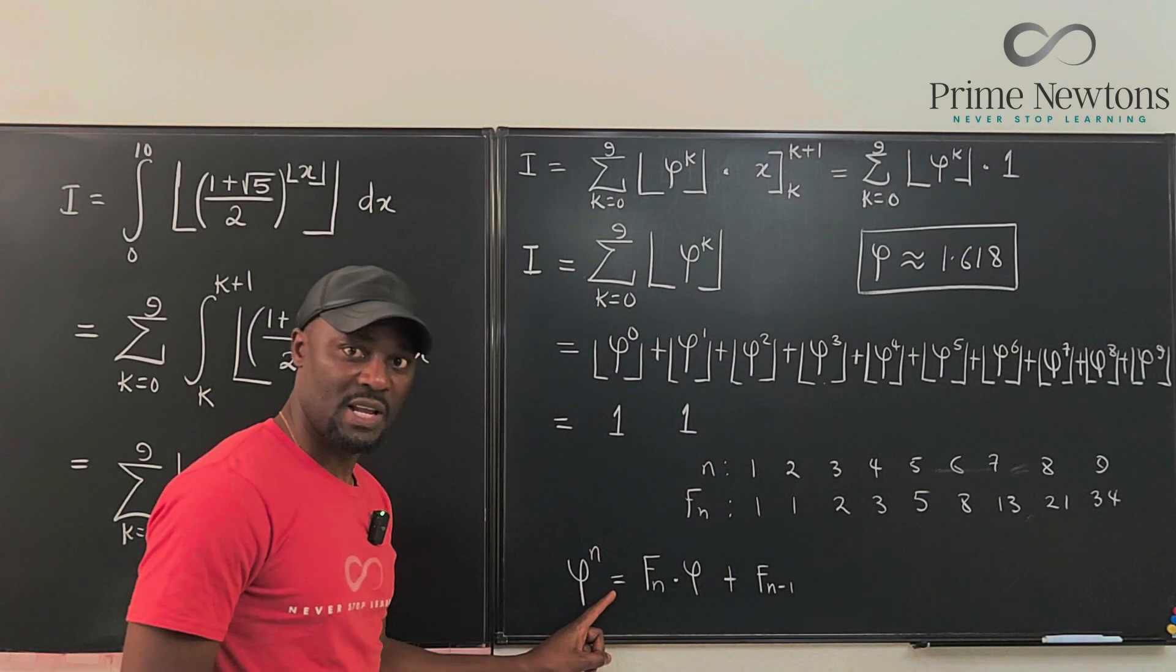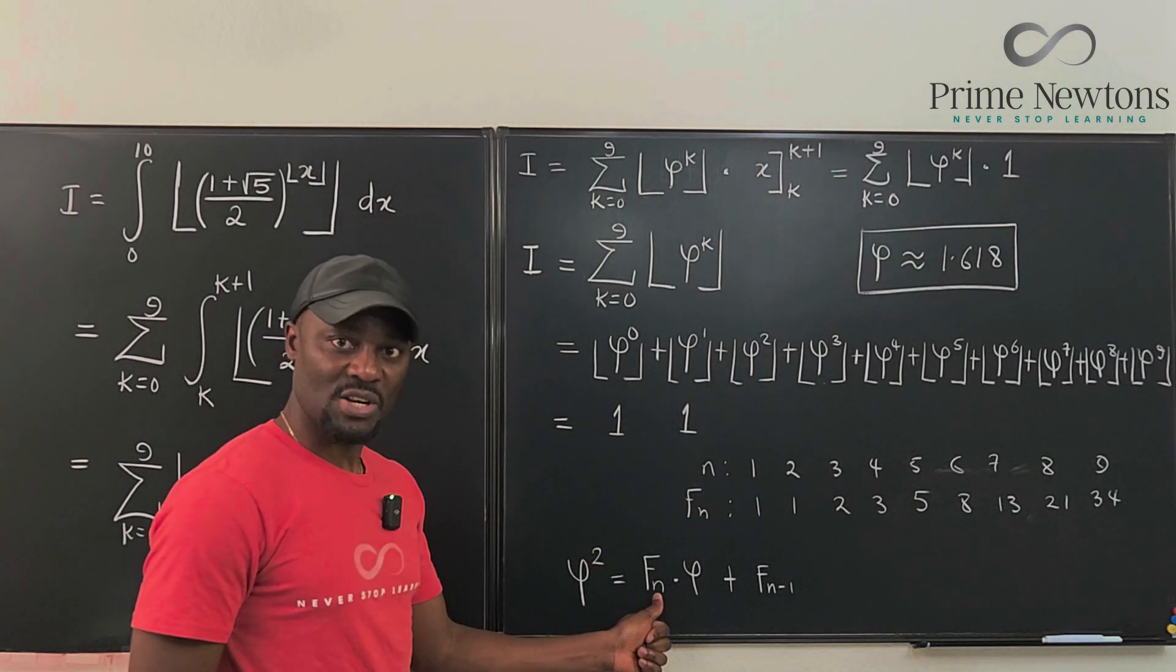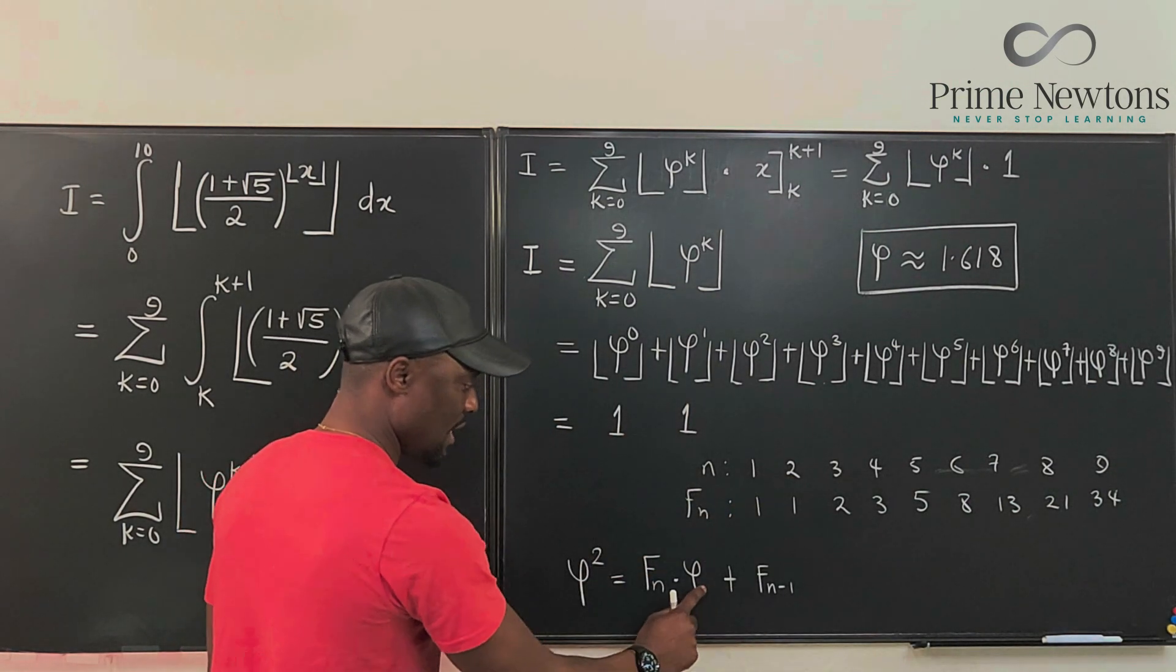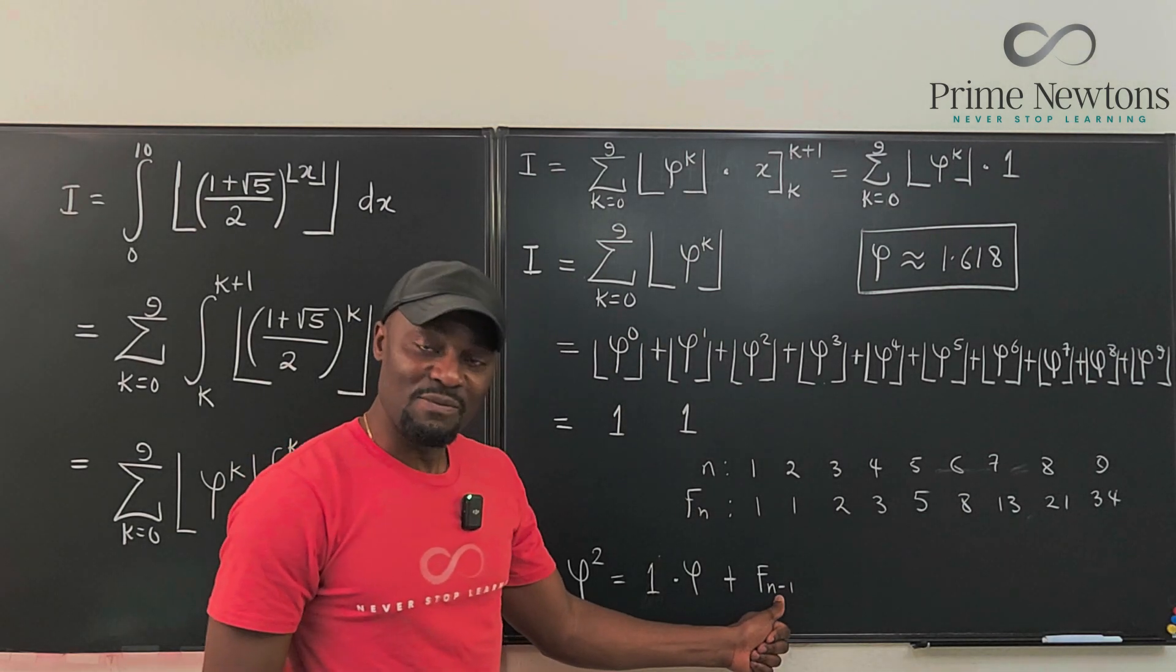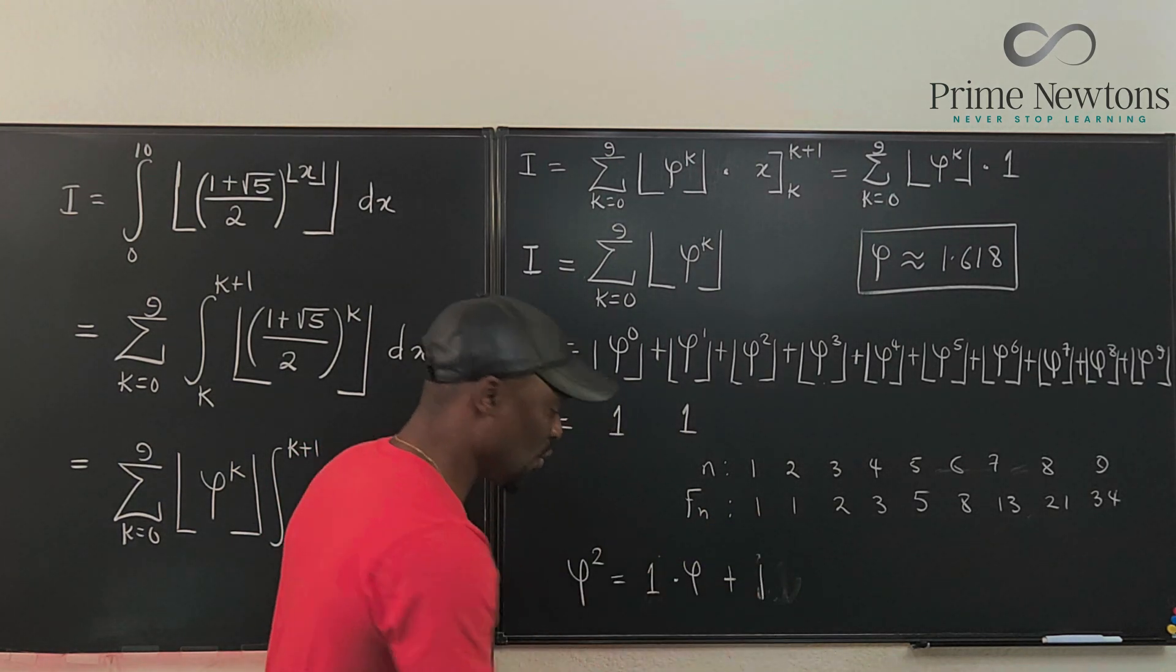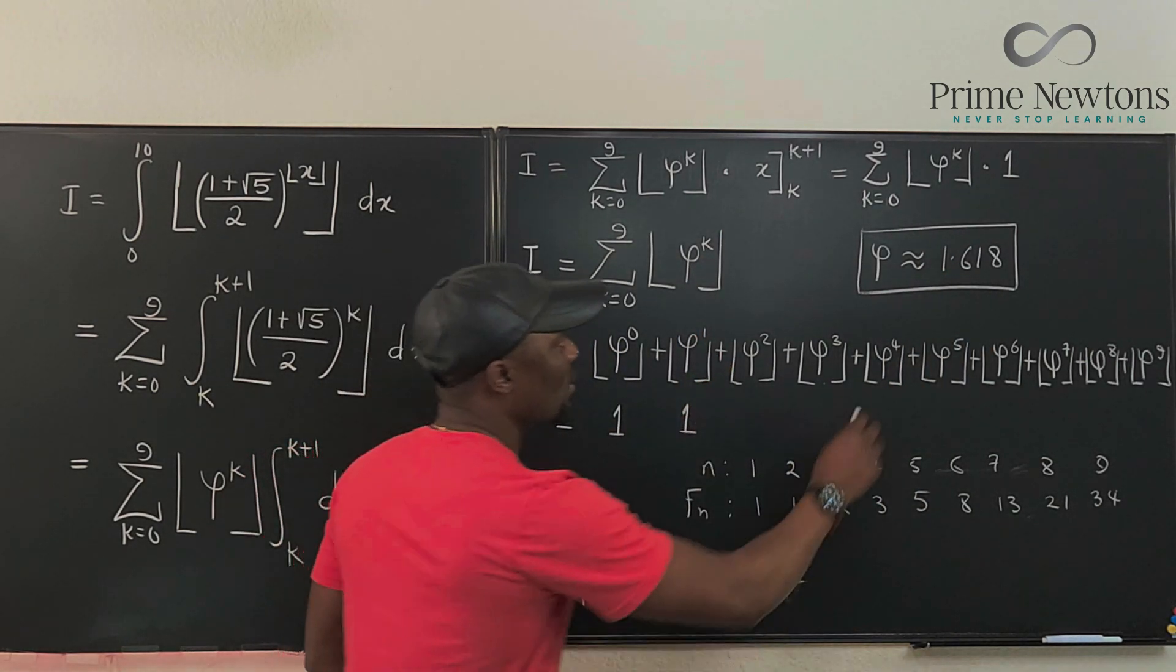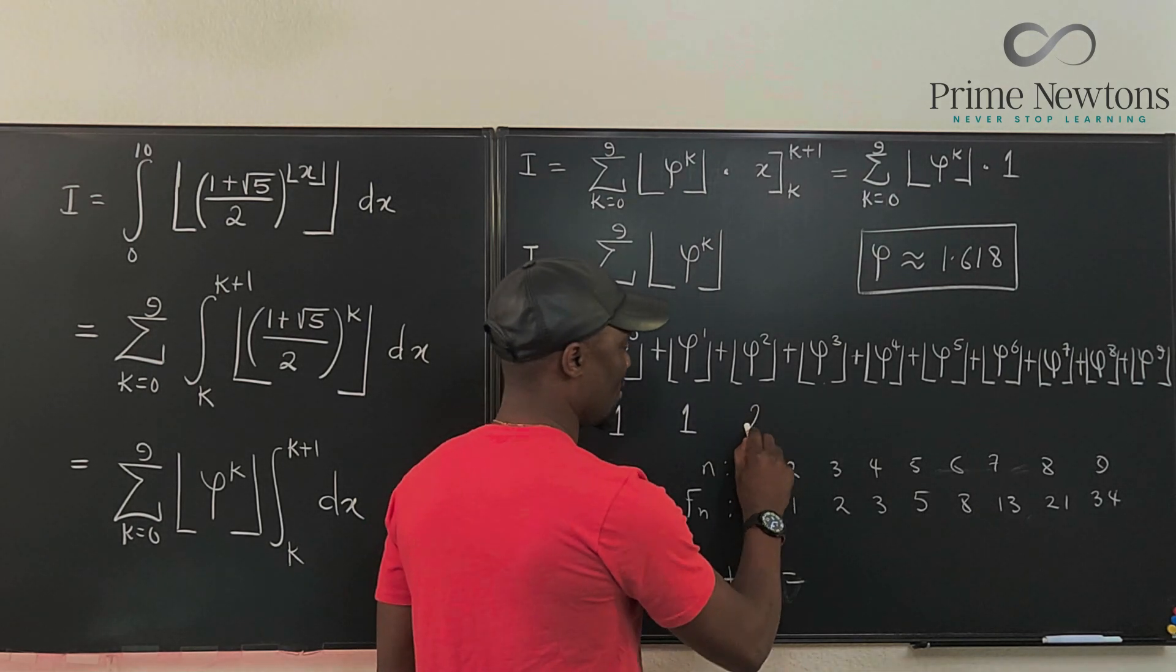Now to obtain the third one, we can use this formula and say that Phi to the second is the second Fibonacci number multiplied by Phi. What's the second Fibonacci number? It's one. So this is one times Phi plus the Fibonacci number before the second term, which is going to be plus one. So the answer is Phi plus one. Phi plus one is 1.618 plus one, which gives us 2.618. The floor of 2.618 is just two.